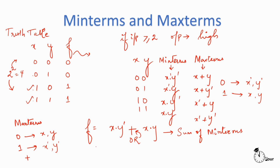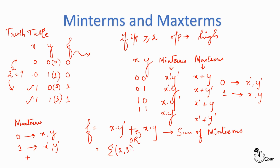We can also represent the same function in terms of max terms, but first there is another way of writing this out. In decimal: the inputs are 0, 1, 2, and 3. The x y dash input corresponds to combination 1 0, which is the number 2, and x y corresponds to 1 1, which is the number 3. So it is a summation of the second and third inputs, written as f(x,y) = Σm(2,3). If you ever see an expression in this notation, it refers to the sum of min terms canonical form.